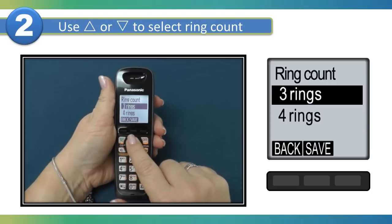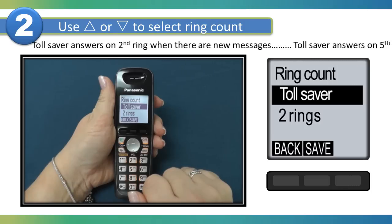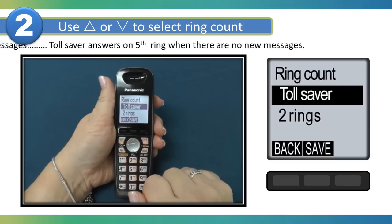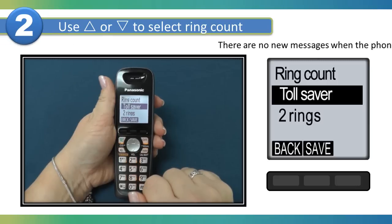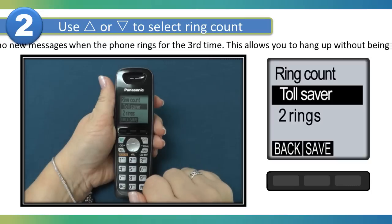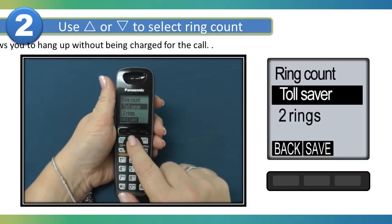You can select two to seven rings, or Toll Saver. When set to Toll Saver, the unit's answering system answers at the end of the second ring when new messages have been recorded, or at the end of the fifth ring when there are no new messages. If you call your phone from outside to listen to new messages, you know that there are no new messages when the phone rings for the third time. This allows you to hang up without being charged for the call.